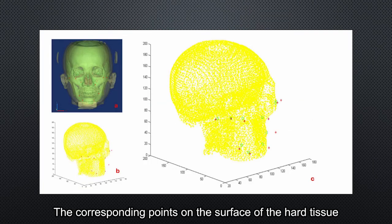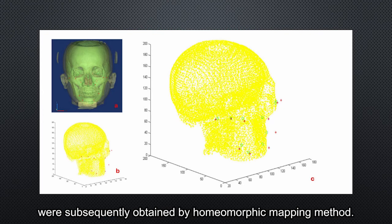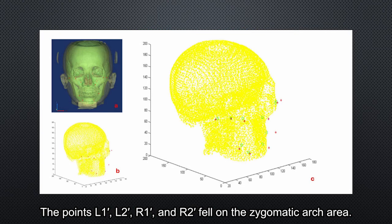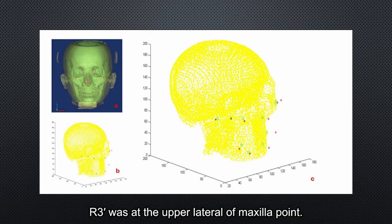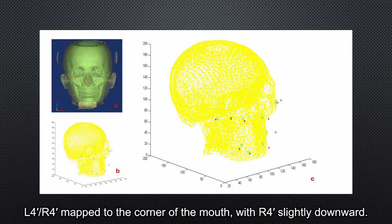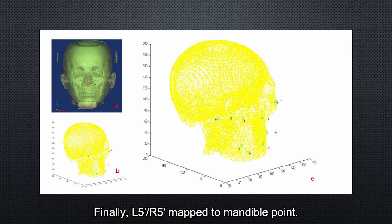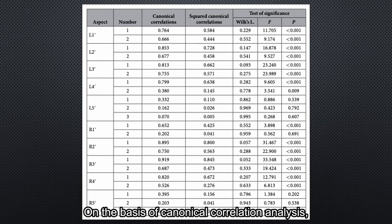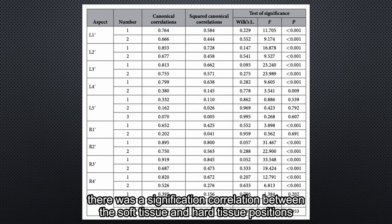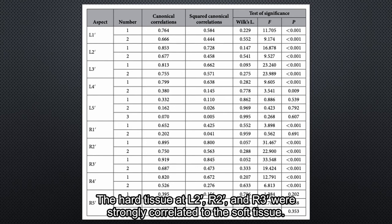The corresponding points on the surface of the hard tissue were consequently obtained by the homeomorphic mapping method. Points L1, L2, R1, and R2 fell under the zygomatic arch area. L2, R2, and L3, R3 marked the cheekbone point and malar point respectively. R3 was at the upper region of the malar point. L4 and R4 marked the corner of the mouth, with R4 slightly downward. Finally, L5 and R5 marked the mandible point. On the basis of canonical correlation analysis, there was a significant correlation between the soft tissue and hard tissue position except at L5 and R5. The hard tissue at L2, R2, and L3 was strongly correlated to the soft tissue.